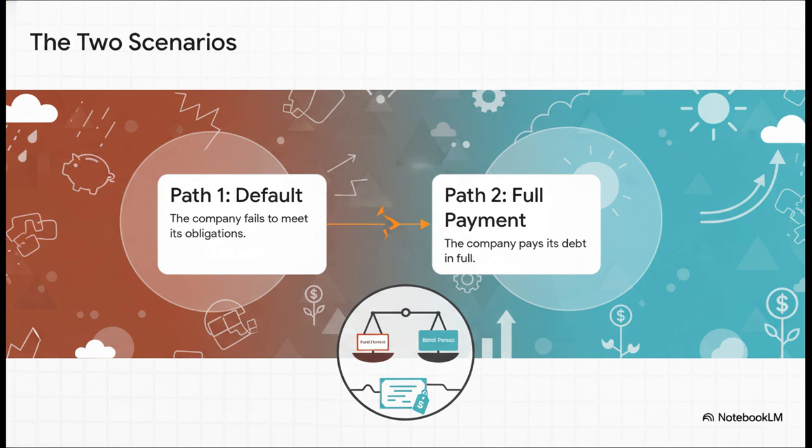Path number one, the company hits a rough patch and defaults on its debt. It can't pay. Path number two, everything goes great and the company makes every single payment right on time in full. The bond's price today is just a blend of those two possibilities.